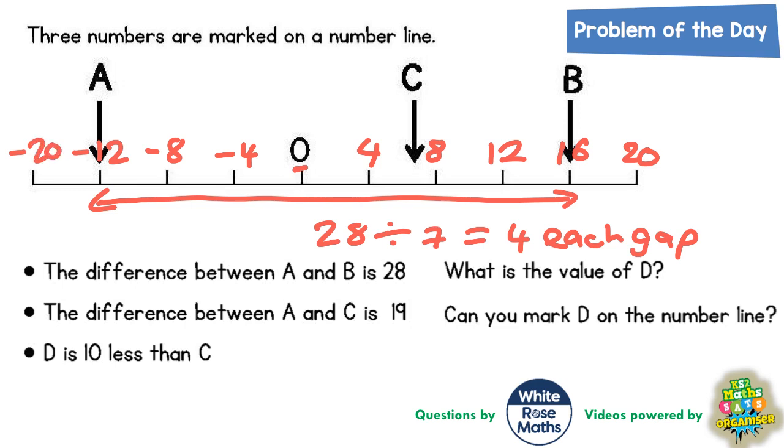The next clue tells us that the difference between A and C is 19. Well, to get from A up to zero, that would be from minus 12 to zero would be 12. And so that we've gone up 19 to get to C from A, we would need another seven. Because 12 add seven is the 19 that we need to go.